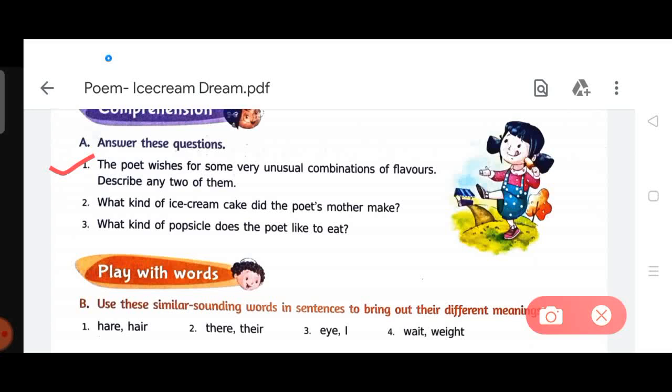Question number two: what kind of ice cream cake did the poet's mother make? Answer is: the poet's mother makes cake with fresh coconut underneath and topped with lazy lemon rings.